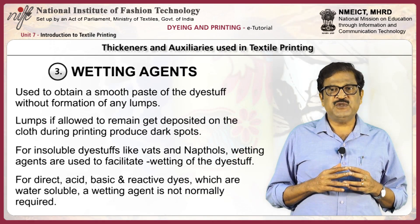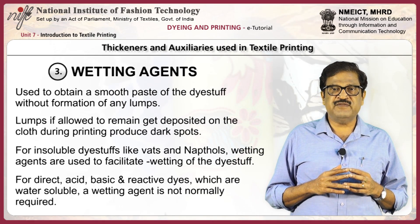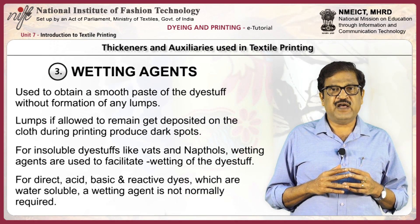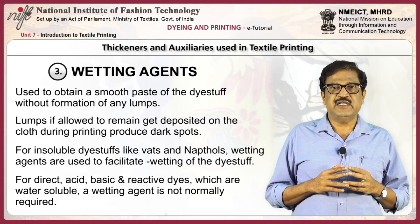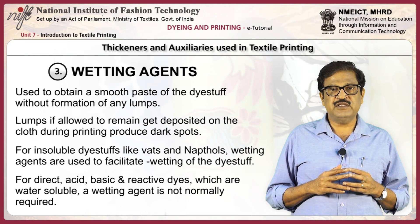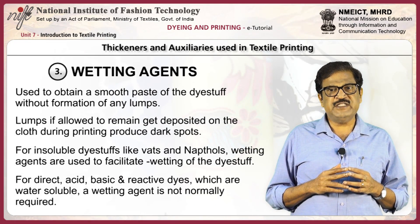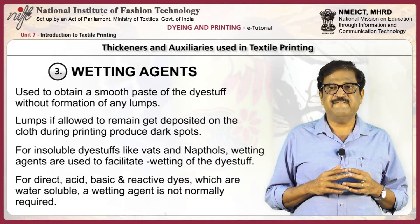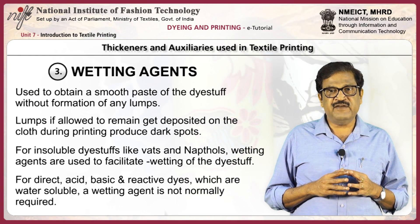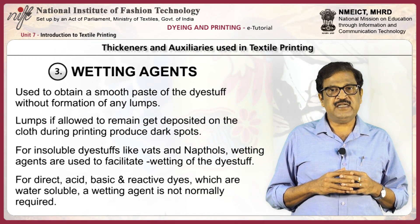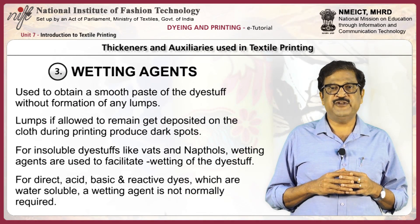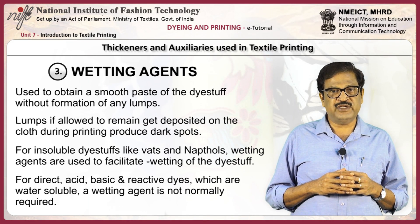Wetting agents are used to obtain a smooth paste of the dye stuff without formation of any lumps. Lumps, if allowed to remain, get deposited on the cloth during printing and produce dark spots. For insoluble dye stuffs like vats and naphtols, wetting agents are used to facilitate wetting of the dye stuff. For direct, acid, basic and reactive dyes which are water soluble, a wetting agent is normally not required.